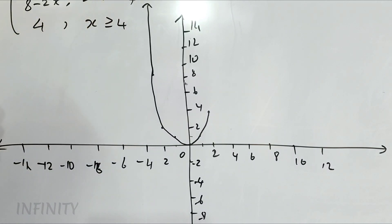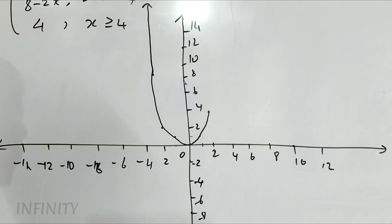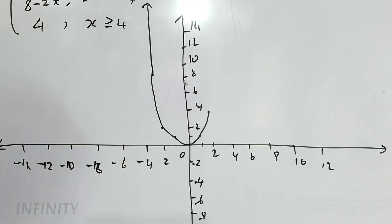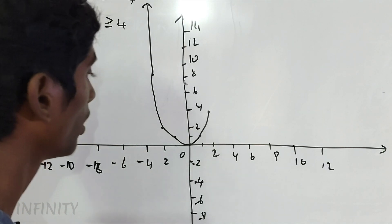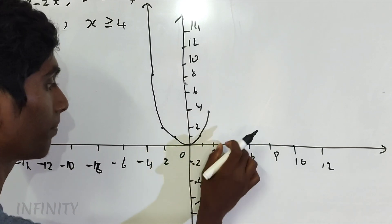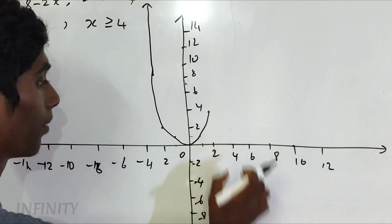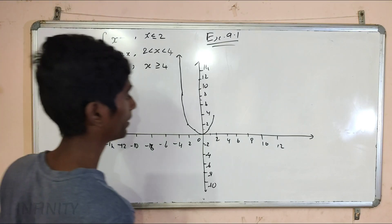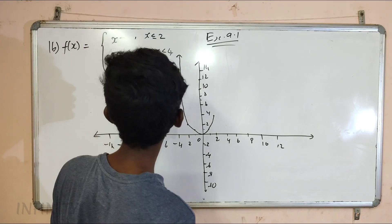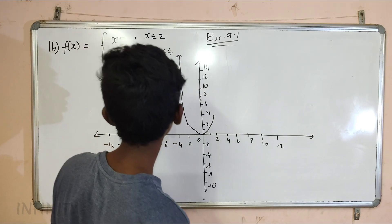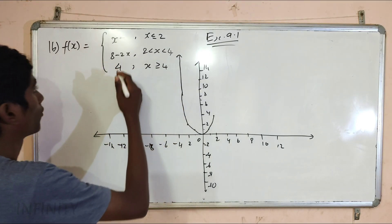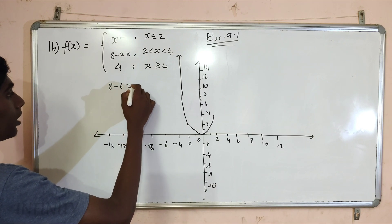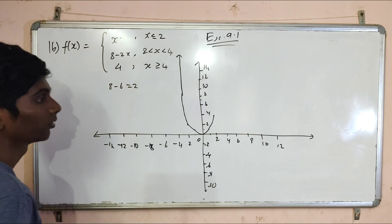Between x equals 2 and x equals 4, we have the function 8 minus 2x. So from 2 to 4, in the gap we have values 2 and 4. In between, the first value to add is 3.